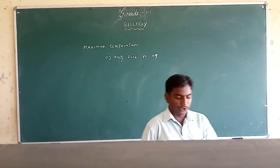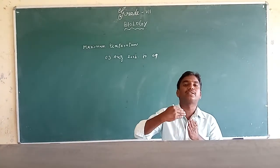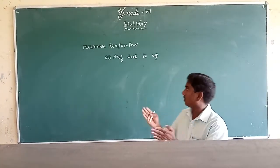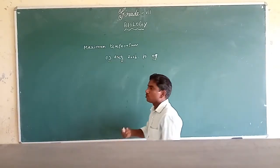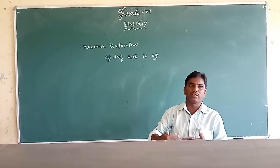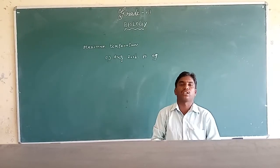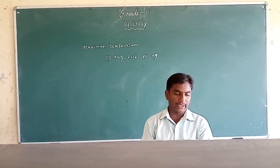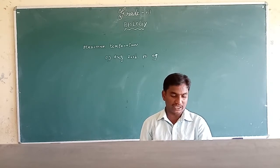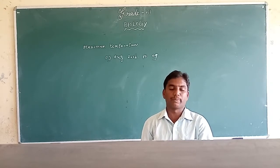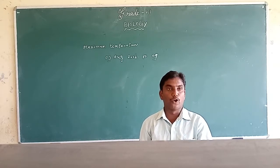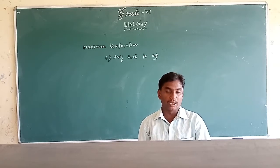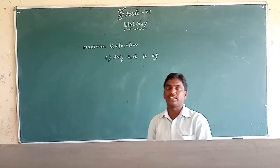That graph shows various temperatures recorded from the 3rd to the 9th day. For example, on the 3rd the maximum temperature was 26.0 degrees Celsius, on the 4th it was 23.5 degrees Celsius, and on the 9th it was 24.4 degrees Celsius.